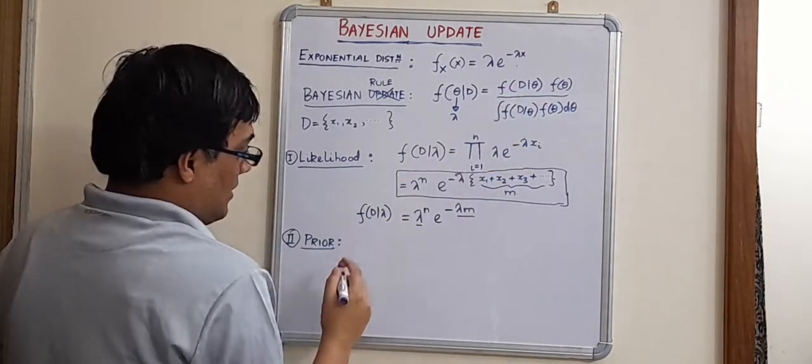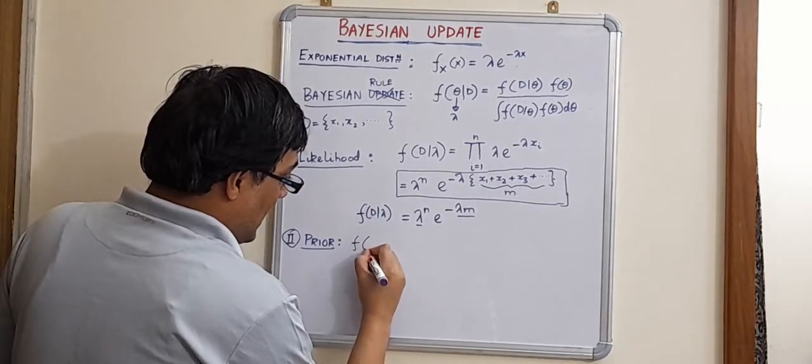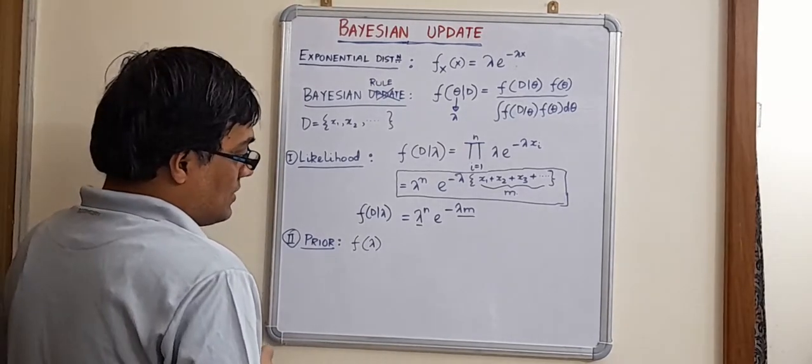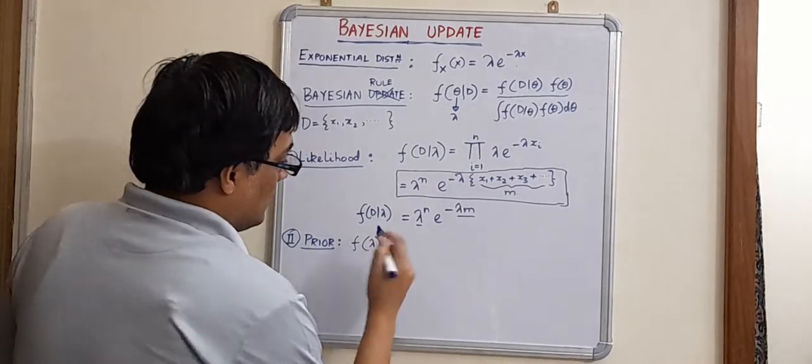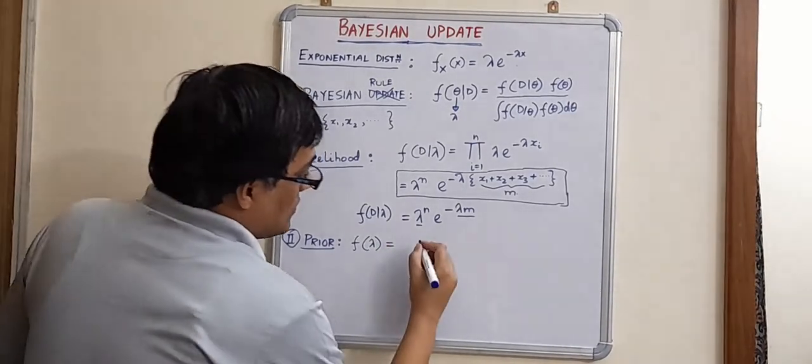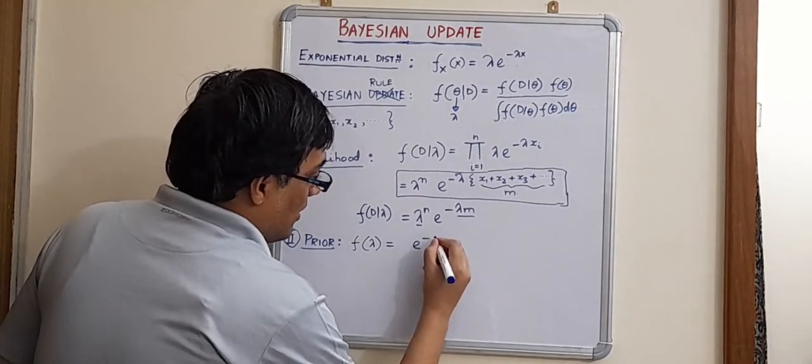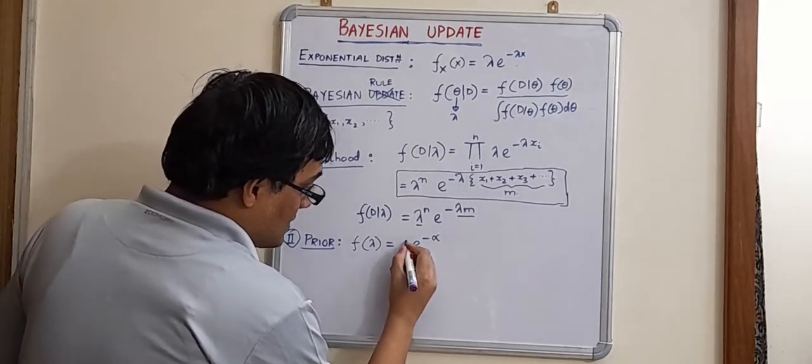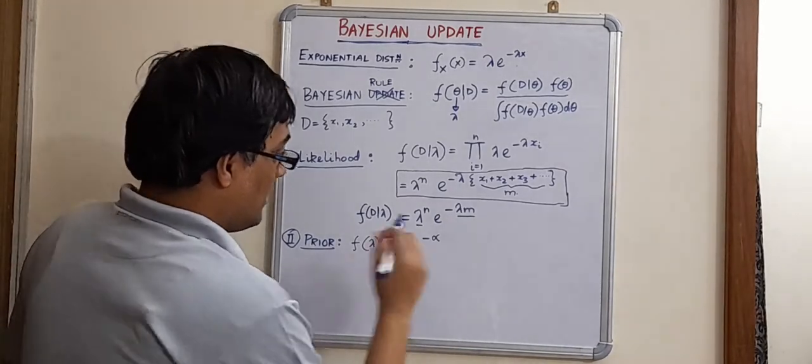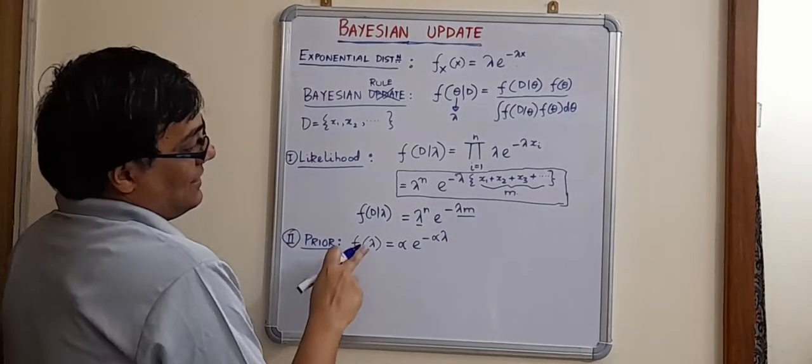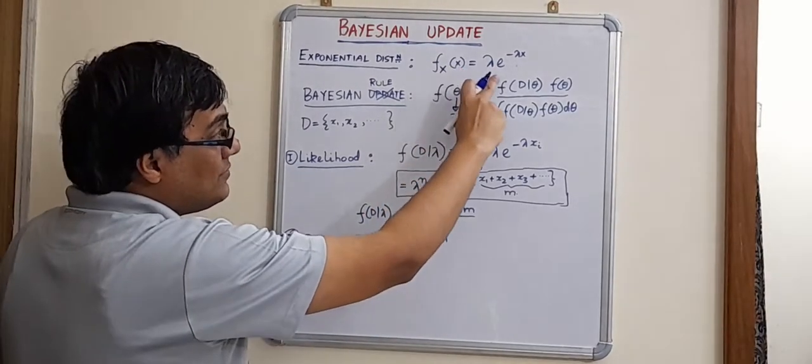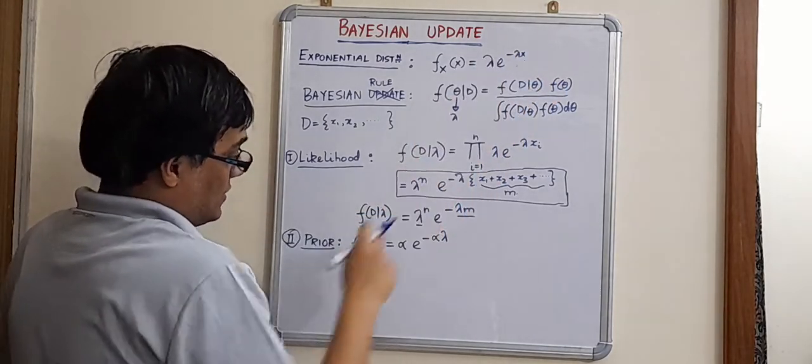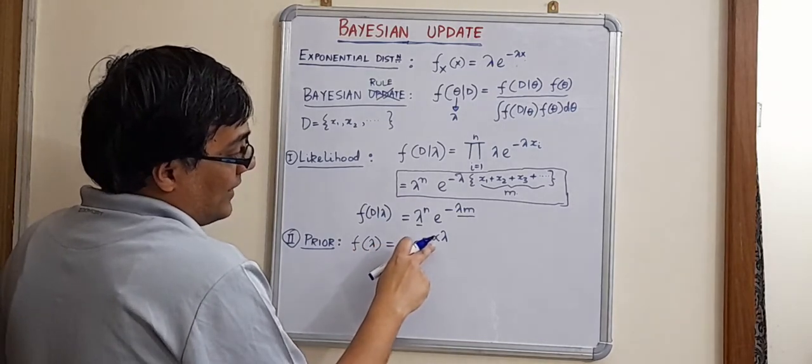Now, the prior is over lambda. The prior is over lambda. So it's basically f lambda. That is, we are trying to define a distribution over lambda. That's the first thing. The second thing is, how are you going to define a distribution over lambda? So we will write as e to the power, just mimicking the likelihood. We are just trying to mimic the likelihood. And we will say that it is alpha into e to the power minus alpha lambda. Remember, lambda is random variable. If x is random variable, the PDF is lambda e to the power minus lambda x. We are subbing that x with lambda. So it will be alpha e to the power minus alpha lambda.